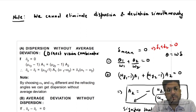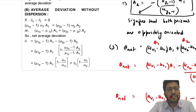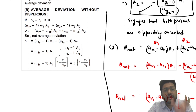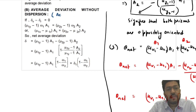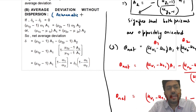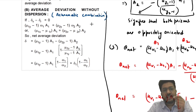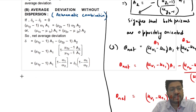The next thing is average deviation without dispersion. In this case there is average deviation but no dispersion, and this is called achromatic combination. When there is no dispersion, the combination is called achromatic. So this time there is deviation but no angular dispersion — it is an achromatic combination.